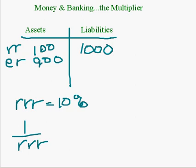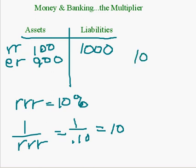The money multiplier is 1 over the required reserve ratio, which in our example would be 1 over 0.1, which equals 10. Any dollar that's deposited or any excess reserves can be multiplied 10 times. So in our example, it would be 10 times $900 — the bank could create $9,000.